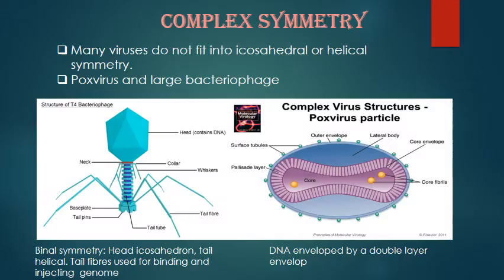Complex symmetry means the virus is neither helical nor icosahedral. Many viruses do not fit into the icosahedral or helical symmetry categories, so they come under this third category, which is commonly known as complex symmetry. Examples of these are mostly pox viruses, like smallpox virus, and large bacteriophages.